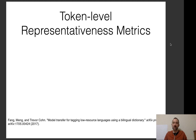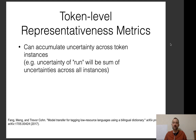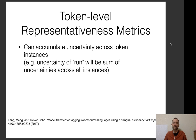For token-level representativeness metrics, one very common and effective approach is accumulating uncertainty over token instances. For example, in part-of-speech tagging, the word 'run' is ambiguous — it could be a verb (to run) or a noun (a run in a stocking, or a river name). We accumulate the uncertainty of 'run' over all its instances and annotate the instance of the word with the highest aggregate uncertainty across all its tokens.